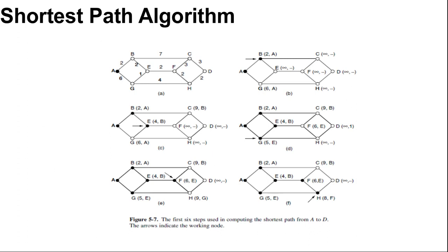Having examined each of the nodes adjacent to A, we examine all the tentatively labeled nodes in the whole graph and make the one with the smallest label permanent, as shown in figure 5.7b.